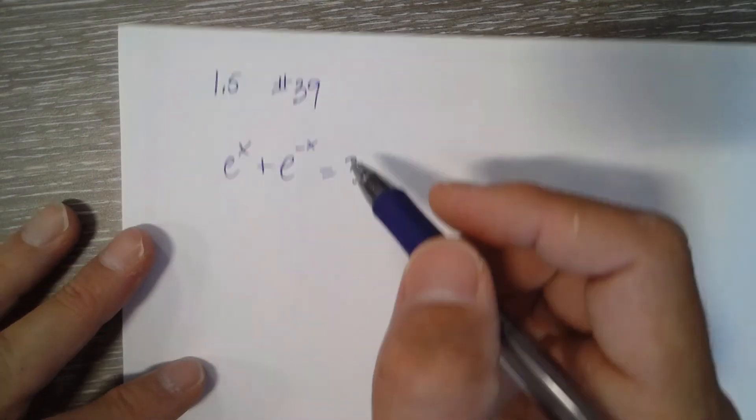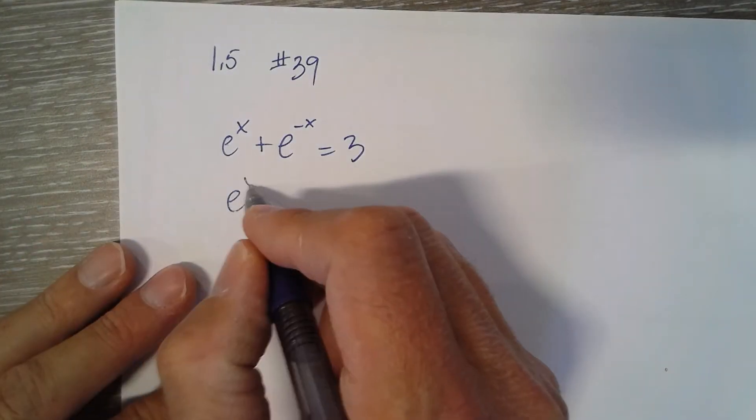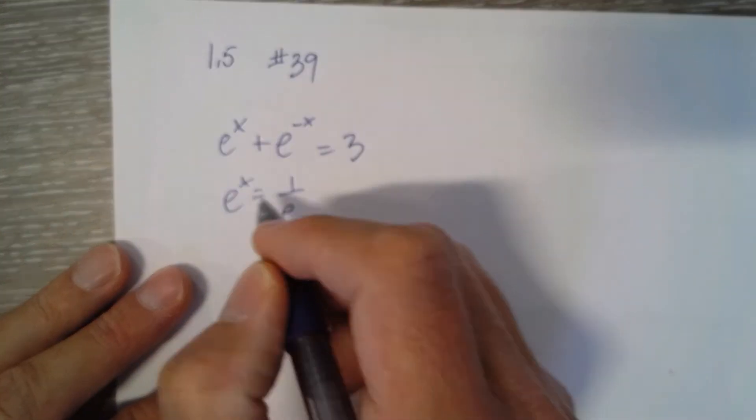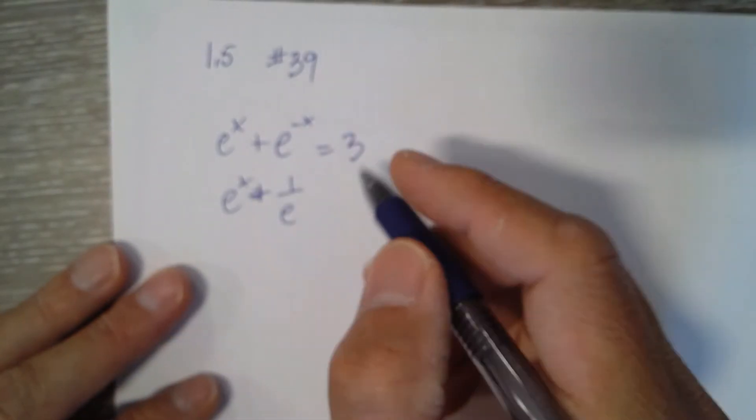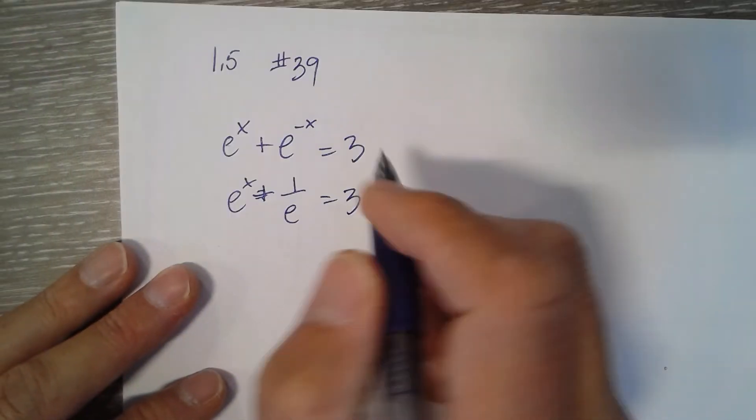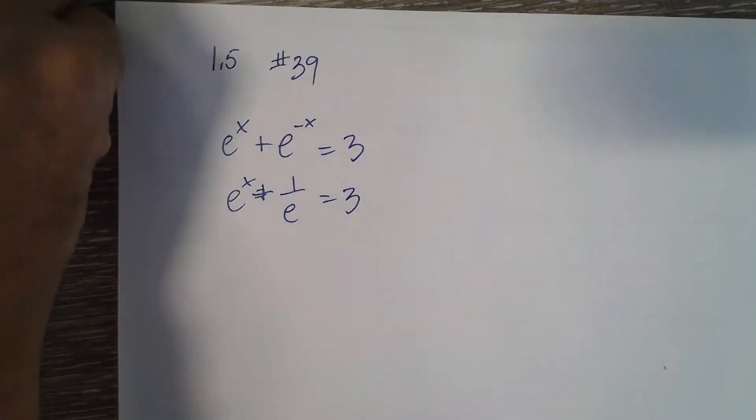All right, so anytime I have a negative exponent, I like to make them positive. It makes more sense to me, so it's, oops, that's a plus. e to the x plus 1 over e to the x equals 3. Okay, so now it's a positive exponent. I can kind of see what I have.